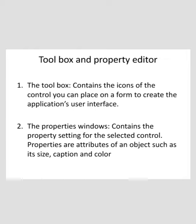The next option is the Properties window. It contains the property settings for the selected control. Properties are attributes of an object such as its size, caption, and color. For example, the caption property for a command button, or the black color property of a form's appearance.